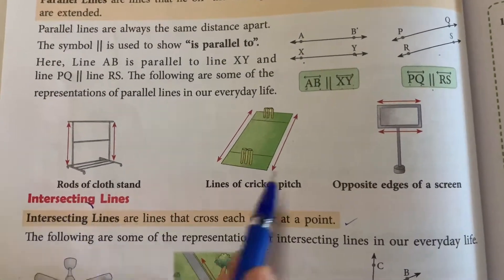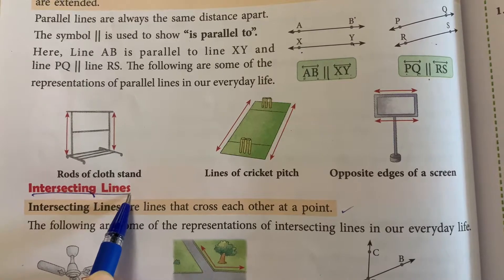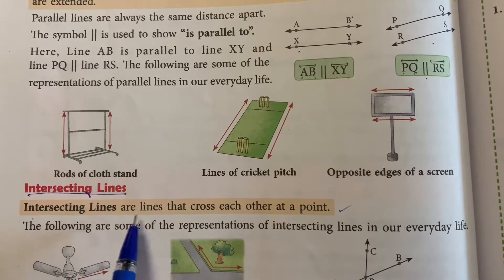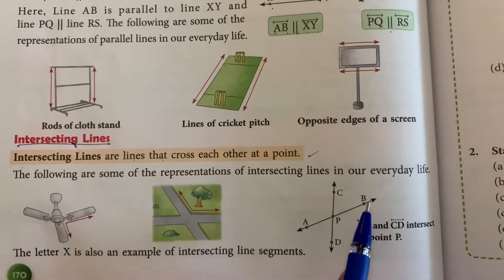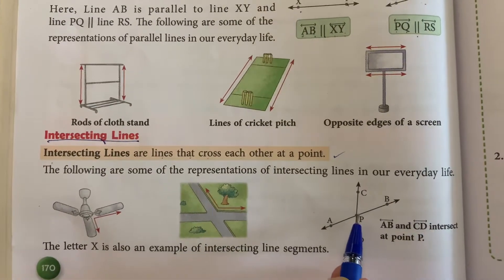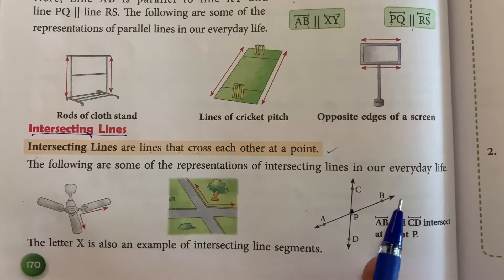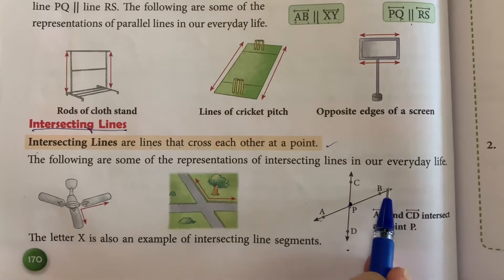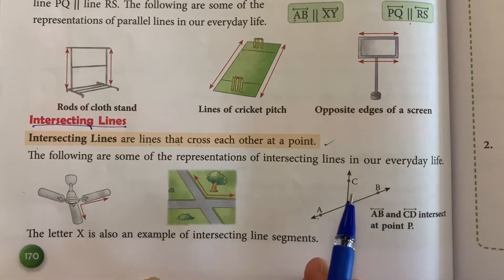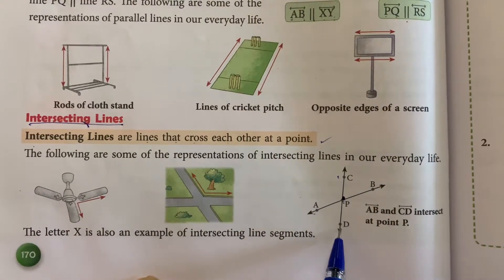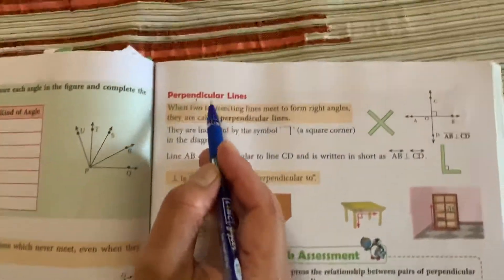Now here is given an example also. Another one is intersecting lines. So what are intersecting lines? Intersecting lines are lines that cross each other at a point. Now see here, these are two lines — they intersect each other at a point. So these kind of lines are called intersecting lines. AB intersects at a point P with another line CD. The example given is a fan and this one.